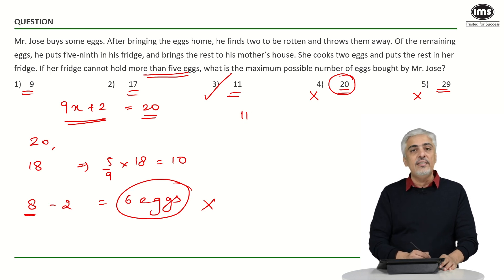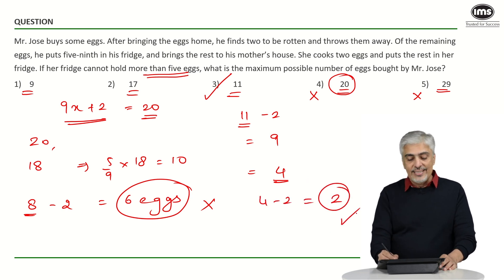11 eggs at the start. How many eggs were spoiled? 2 were spoiled, so remaining are 9. 5 9th go into the refrigerator, 5 go into the refrigerator, 4 are remaining. Out of 4 she cooks 2, so 4 minus 2, 2 are left which can easily go in the refrigerator. This is less than 5 and hence my answer is 11.